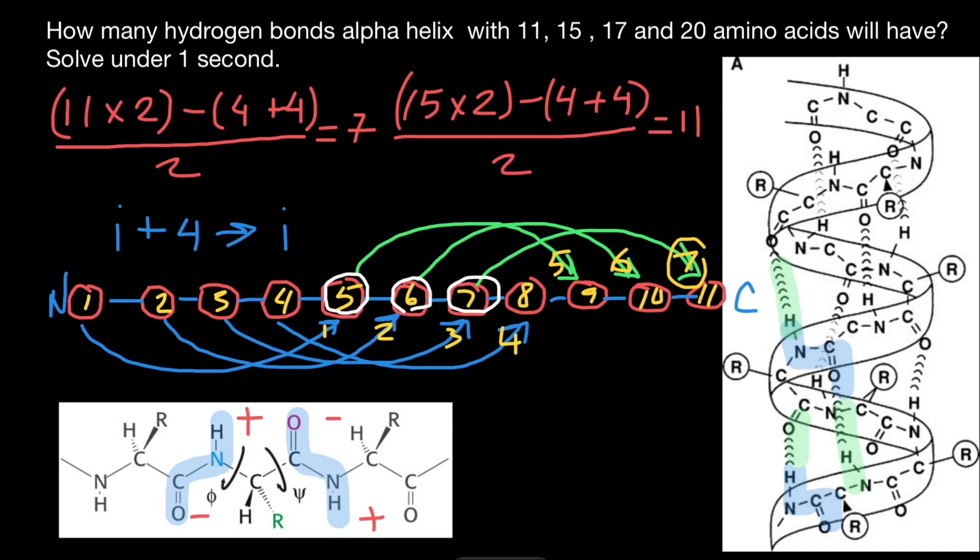So basically, 11 minus four is going to be seven. 15 minus four is going to be 11. 17 minus four is going to be 13 hydrogen bonds. And if we have 20 amino acids minus four, we are going to get 16 hydrogen bonds.